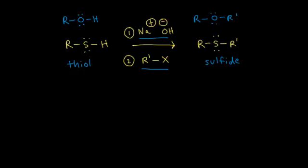Let's look at the mechanism to make sulfides. If I start with my thiol right here, I have carbon bonded to sulfur, bonded to a hydrogen, and then two lone pairs of electrons on that sulfur. If I think about the difference in electronegativity between carbon and sulfur, there's actually not much of a difference in terms of numbers, so this is not a very polar bond.